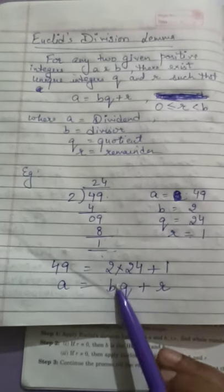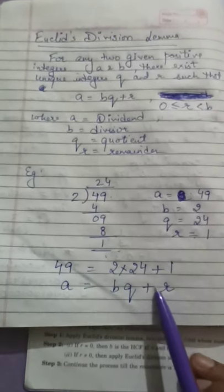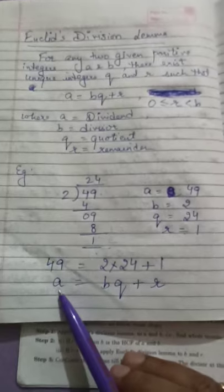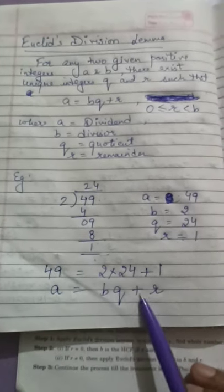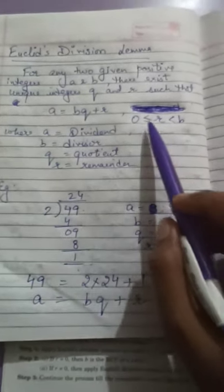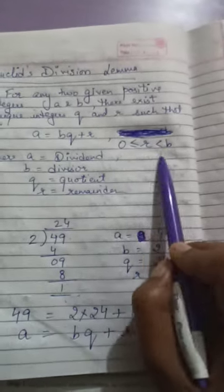Here, A equals 49, B is 2, Q is 24, and remainder is 1. So it can be written as A equals BQ plus R. We should now understand this condition properly.